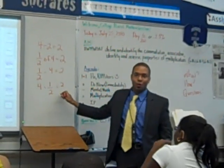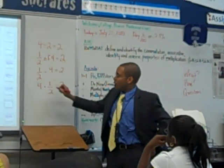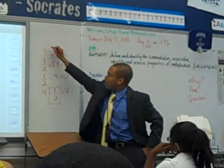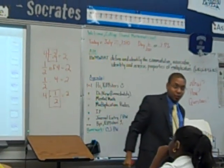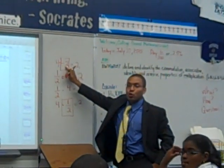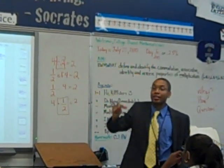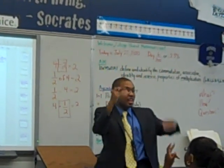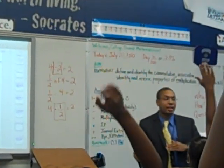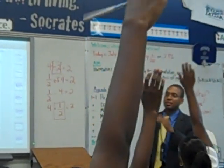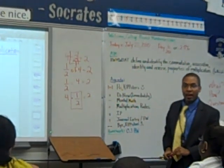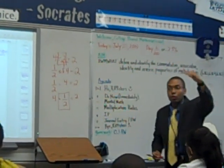Now, kids, watch something. How do you make 2 as a fraction? If a number doesn't have a denominator, what do you put it over automatically to make it a fraction? You put it over 1. I'm going to put it over 1. Everybody sees that? So I have 2 over 1.